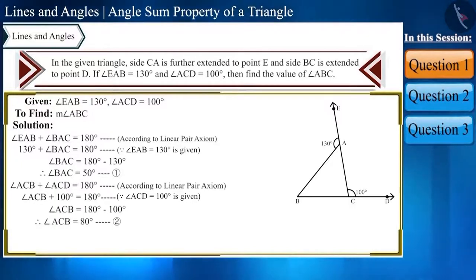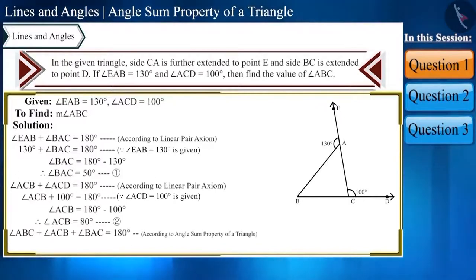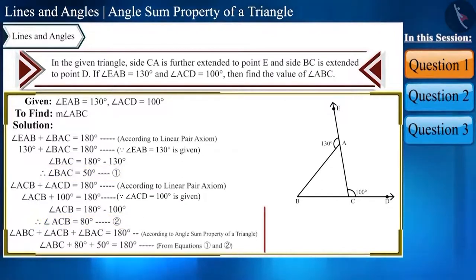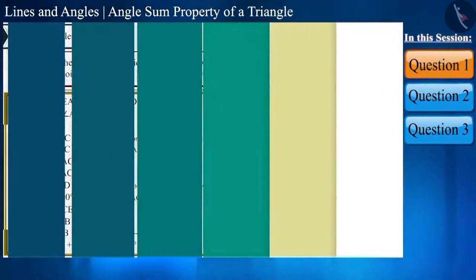Now, angle ABC plus angle ACB plus angle BAC equals 180 degrees according to the angle sum property of a triangle. Substituting the values from equation 1 and equation 2, we get angle ABC equals 50 degrees. Thus the first question is solved.